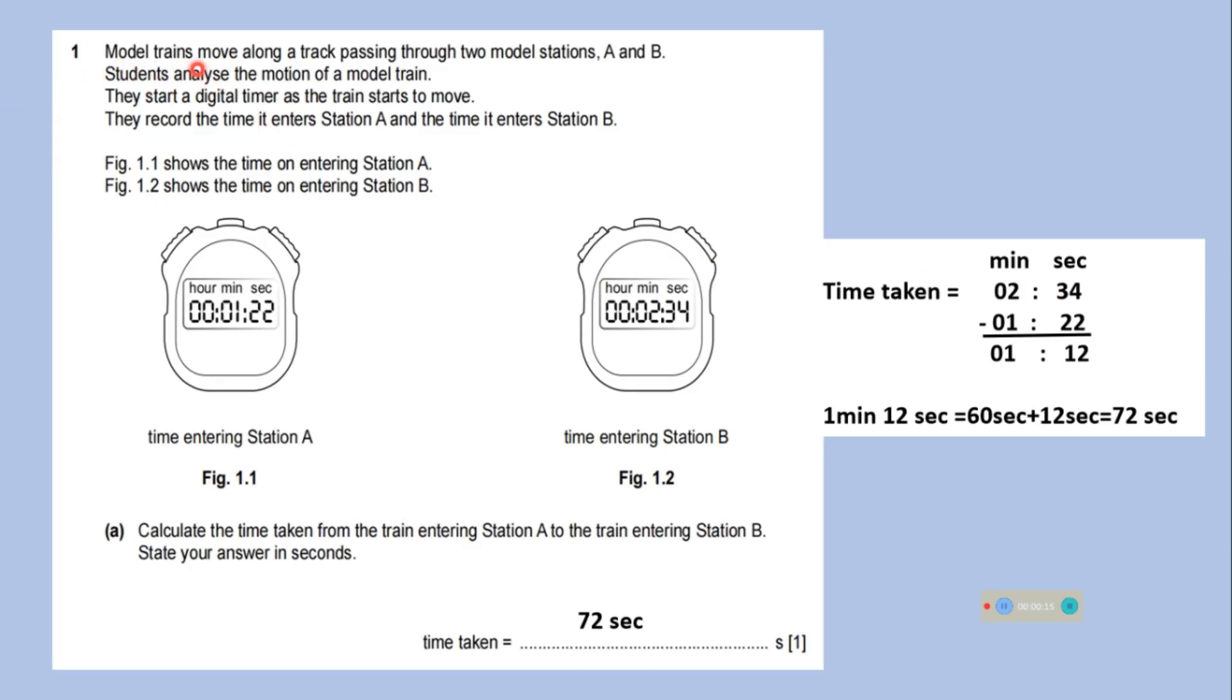Q1. Model trains move along a track passing through two model stations A and B. Students analyze the motion of a model train. They start a digital timer as the train starts to move. They record the time it enters station A and the time it enters station B. Calculate the time taken from the train entering station A to the train entering station B. State your answer in seconds.